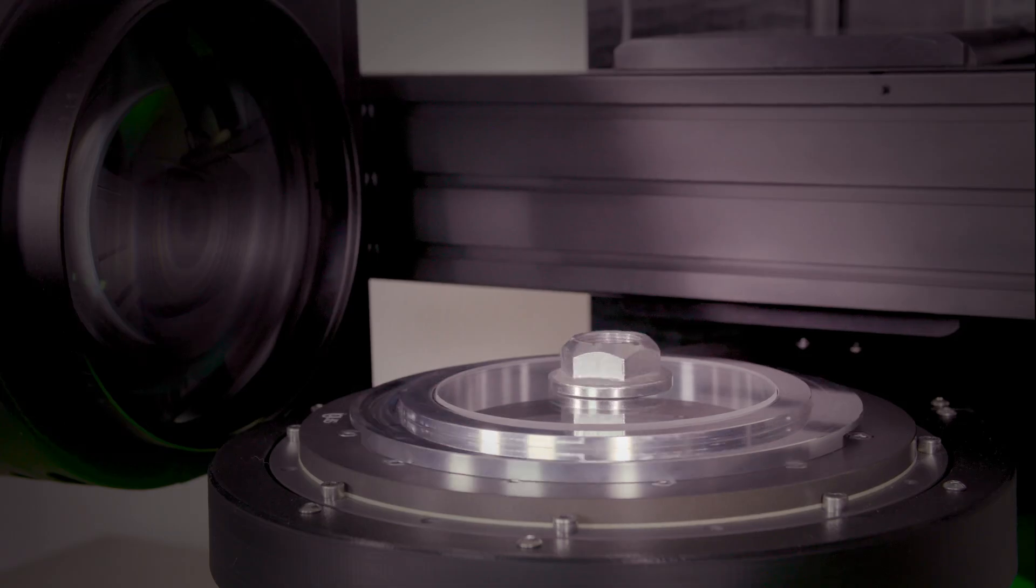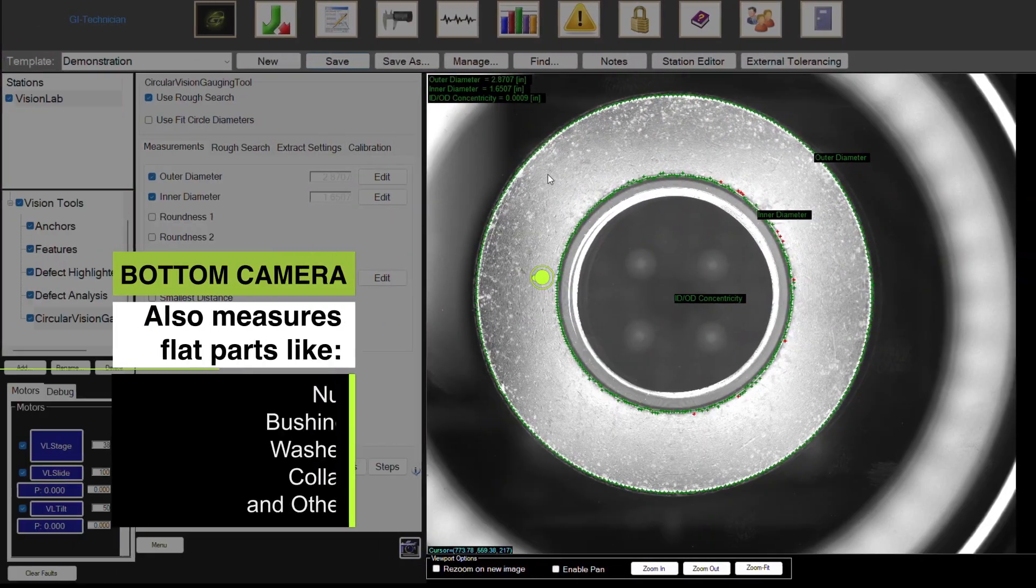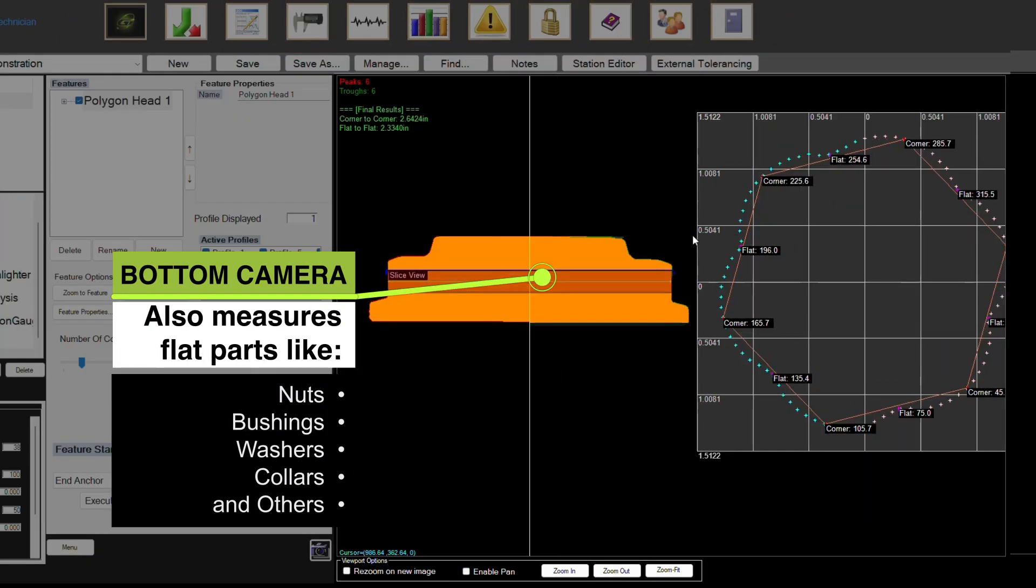The bottom camera also provides the ability to measure flat parts like nuts, bushings, washers, collars, and others.